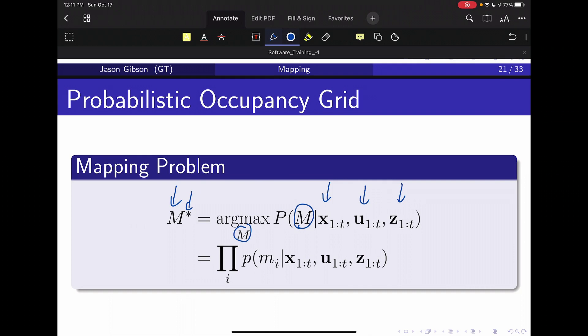And since we have that independent property, we can split this into essentially a product, since we're saying that each grid cell itself is independent.